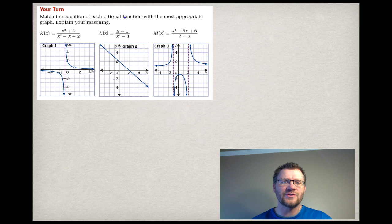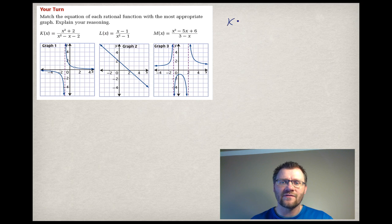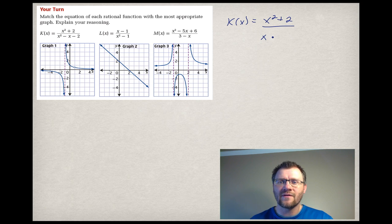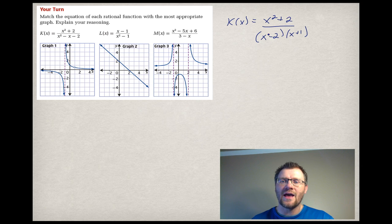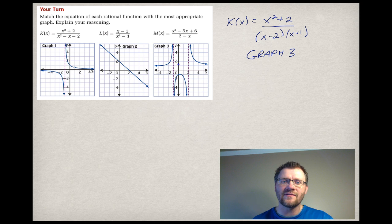A final example: match the equation of each rational function with the most appropriate graph. We've got three equations and three graphs. Starting with k(x) — we can't factor the top, x squared plus 2, but we can factor the bottom to get (x minus 2)(x plus 1). Because there are no factors in the top, this one has no x-intercepts, and there are two vertical asymptotes at x equals 2 and x equals negative 1. That corresponds with graph number 3.